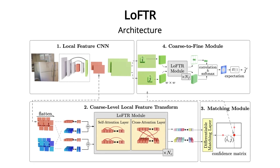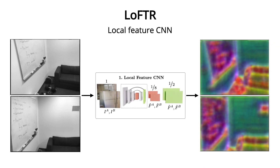LOFTR has four modules. The local feature CNN is a simple encoder-decoder-style CNN that extracts two levels of feature maps. The CNN reduces the dimension of the feature maps, which will keep the computation cost to a manageable level for later modules.